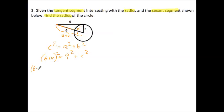Now on the left, we really have 6 plus R times 6 plus R is equal to 9 squared plus R squared. So we need to FOIL our parentheses. First, outer, inner, last.